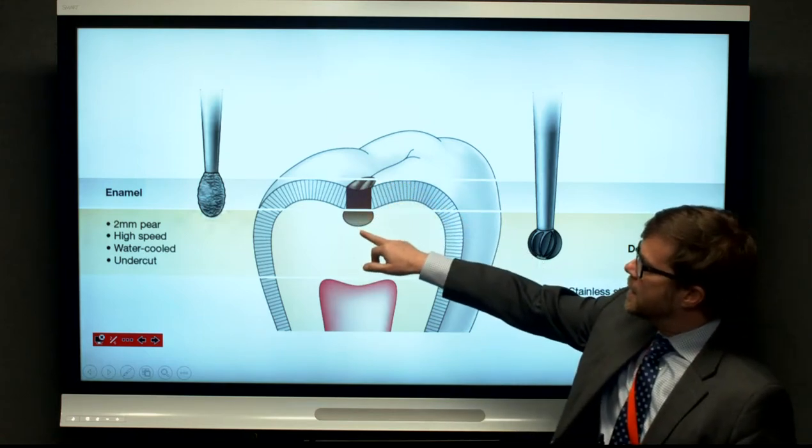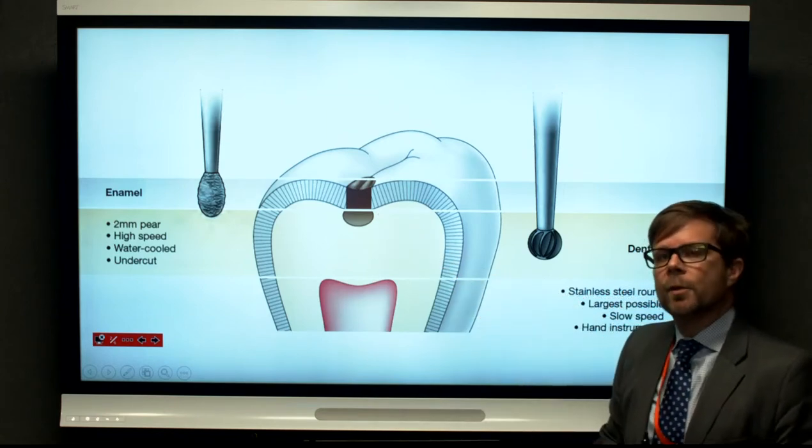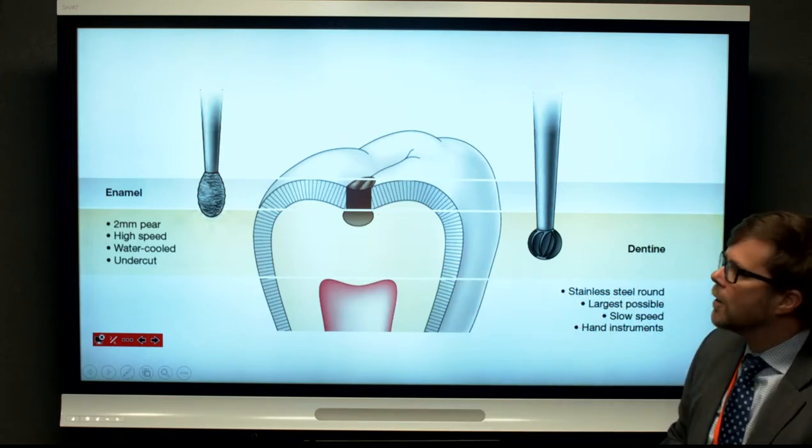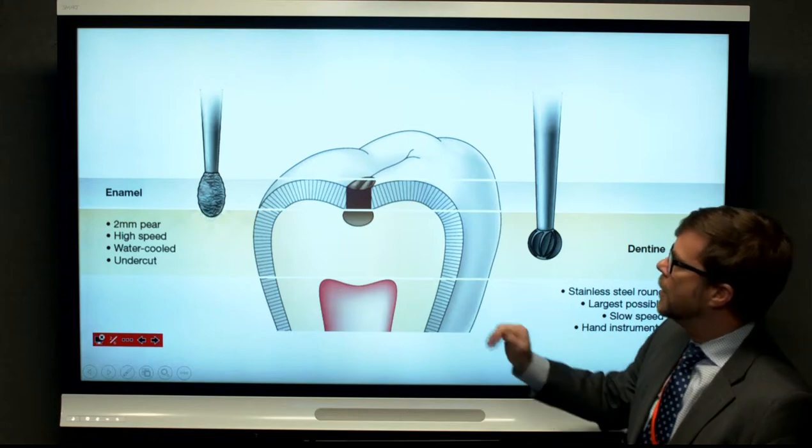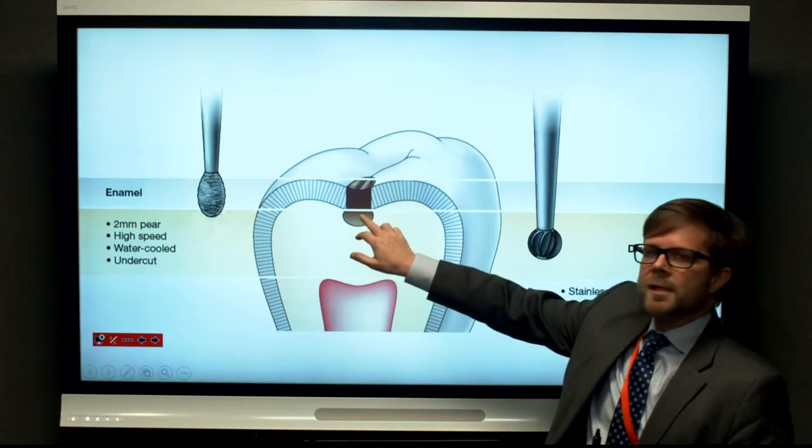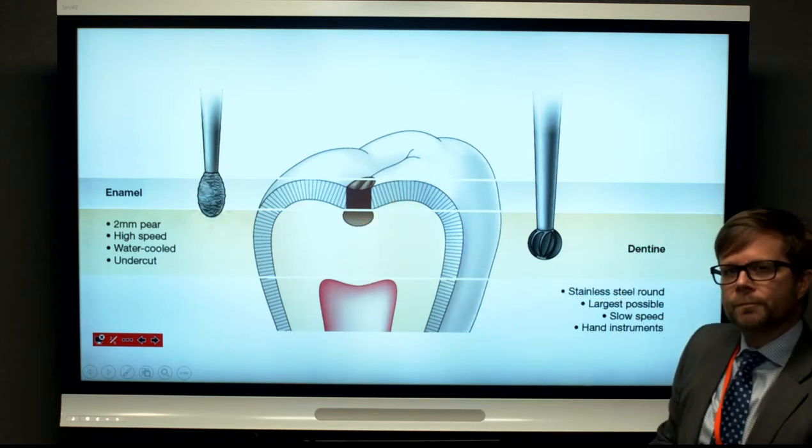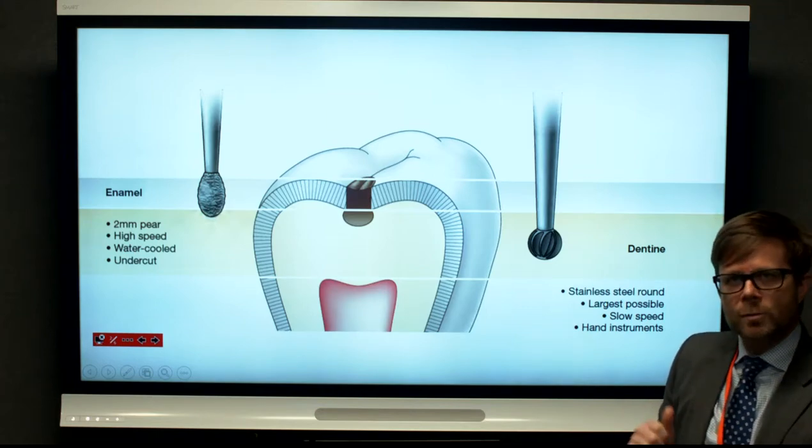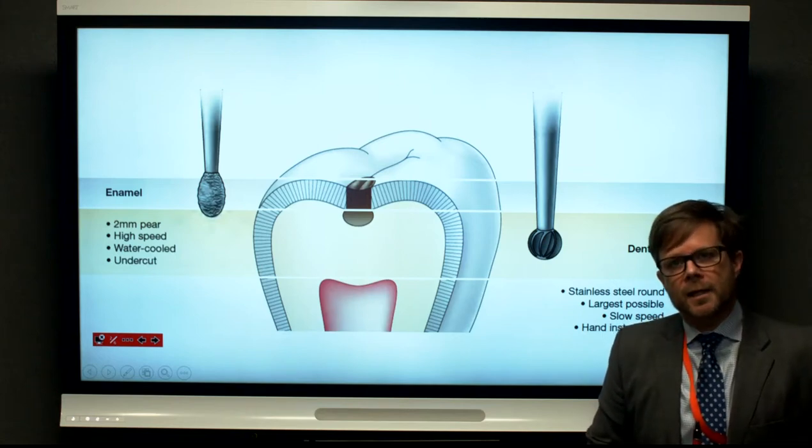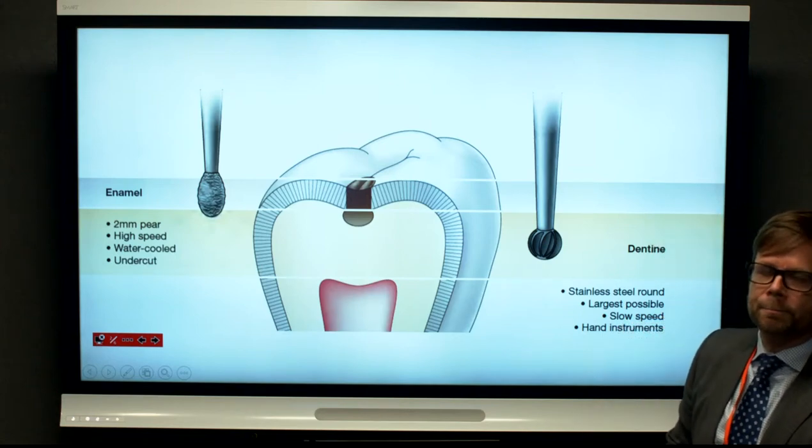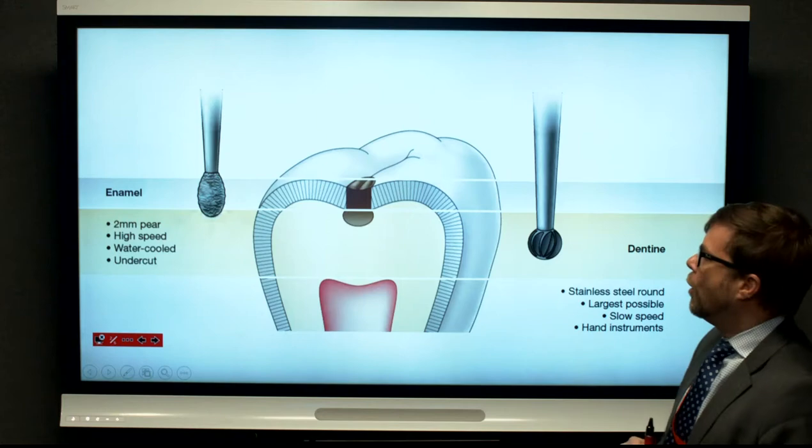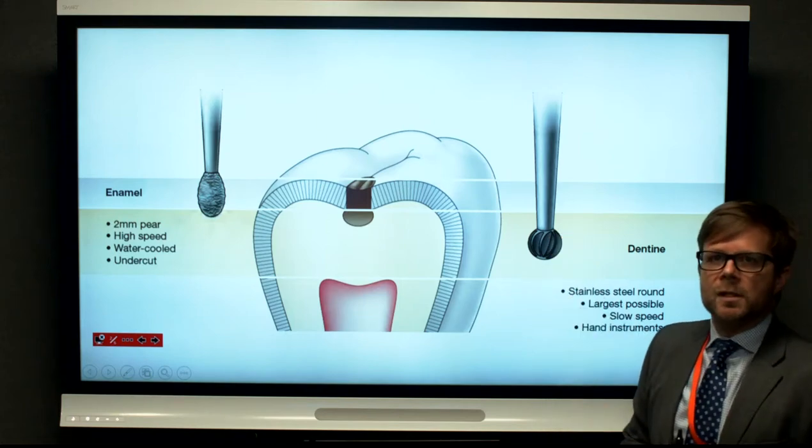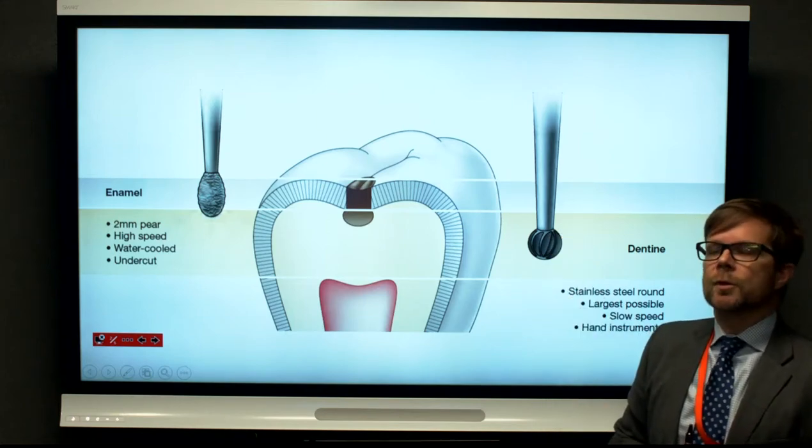But once we've accessed the dentine appropriately with enough access and outline form and convenience form, we should then assess the dentinal lesion. The removal of necrotic dentine or infected dentine from that area should be done by either hand instruments such as the excavator, or you can use the slow speed handpiece with steel burrs.